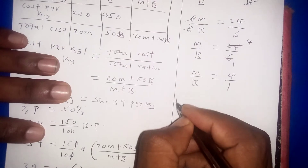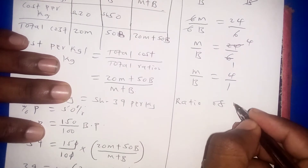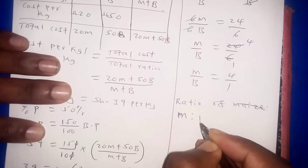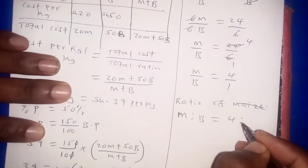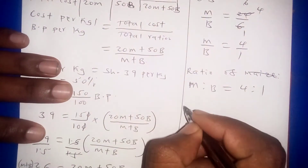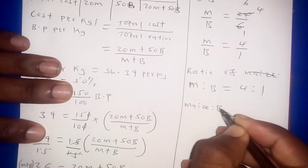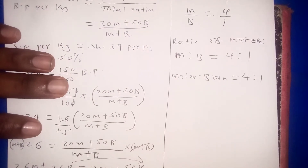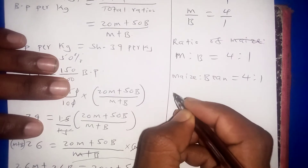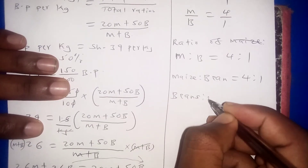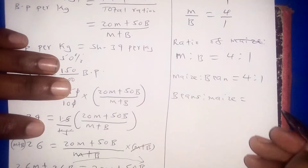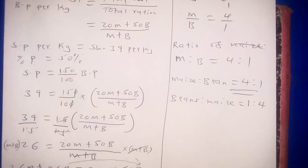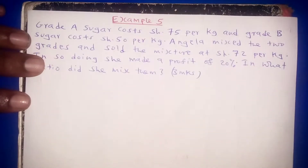Therefore the ratio of maize to beans is 4 to 1. Alternatively, the ratio of beans to maize would be 1 to 4. That is the expected ratio for the first problem.